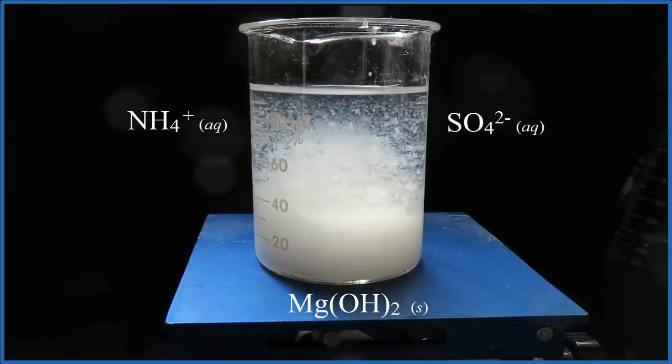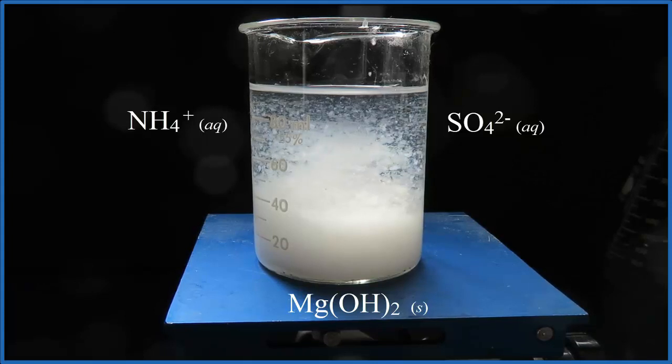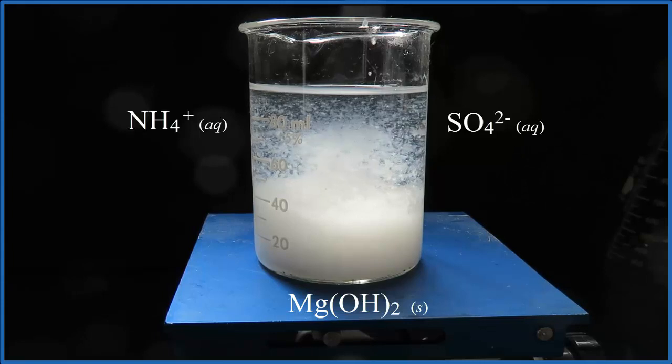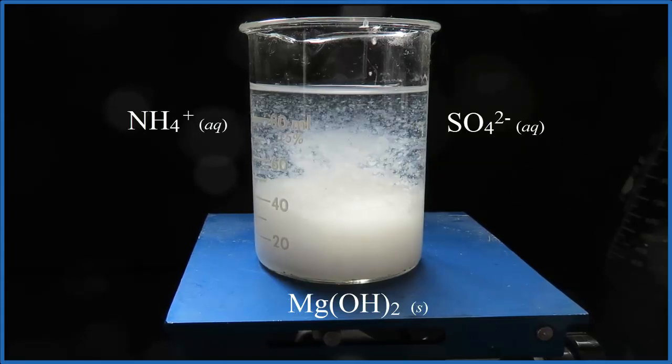So if we could filter out the magnesium hydroxide, we'd be left with a clear liquid. And in that liquid would be that ammonium sulfate. If we let the water dry out, we'd have crystals of ammonium sulfate.